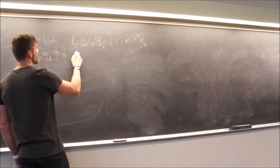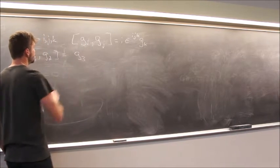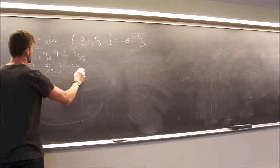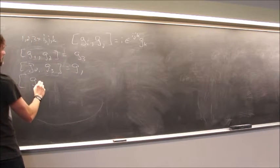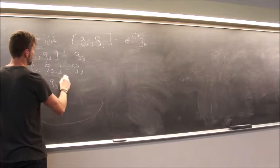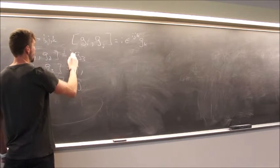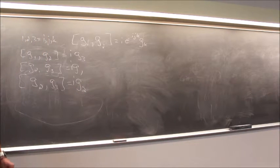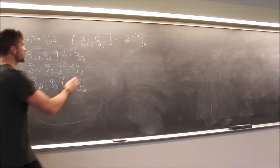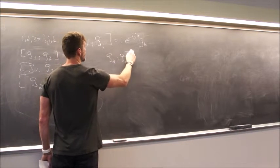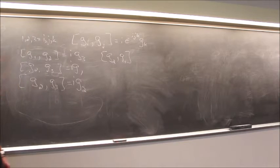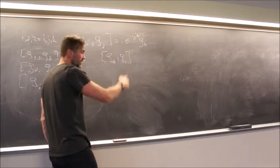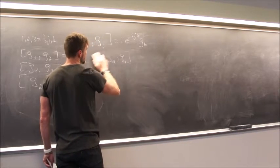So the commutator [G1, G2] is just G3, and similarly [G2, G3] is G1, and [G3, G1] is G2. It's all built into this anti-symmetric Levi-Civita symbol. The question now is, as we developed it, these G's were represented naturally by three-by-three matrices, because we extracted the G's by thinking about a rotation matrix in three dimensions. Three-by-three rotation matrices give rise to G's that are also naturally represented by three-by-three matrices.